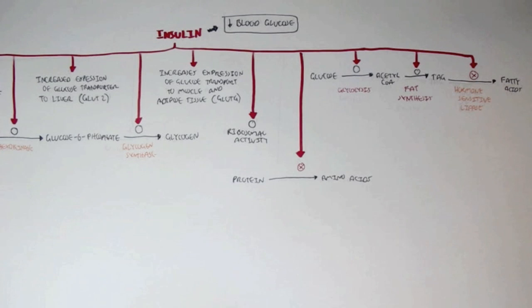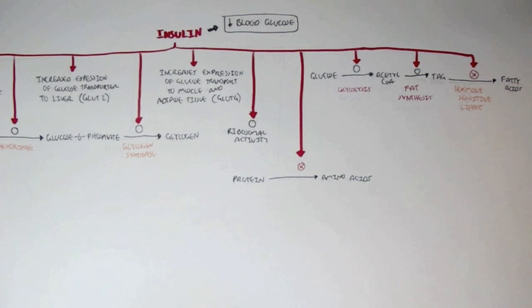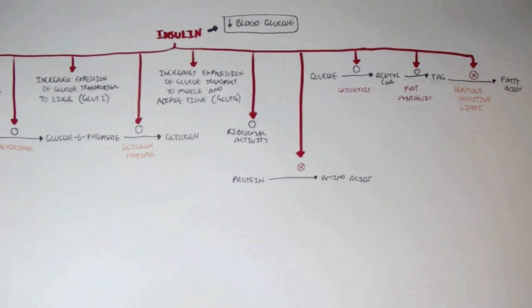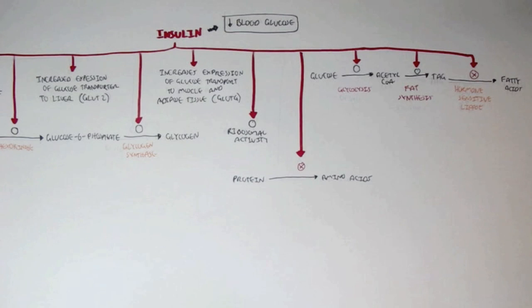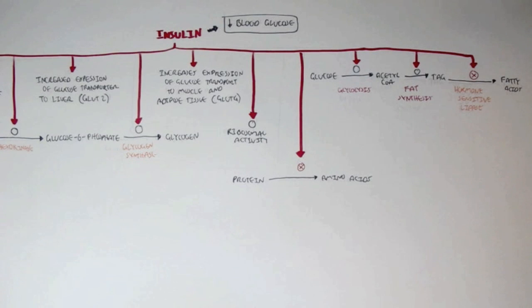In summary, insulin is important in storing excess energy in the forms of glycogen, triacylglycerols, and proteins in different organs. That concludes this video on insulin. Please watch the video on glucagon if you haven't watched it yet. Please comment, like, and subscribe — thank you very much.